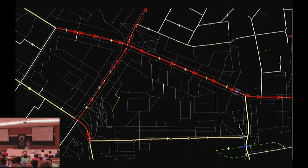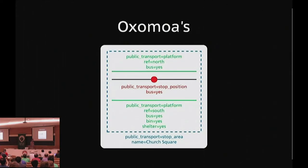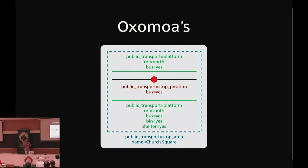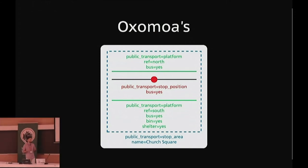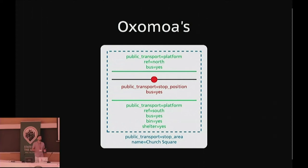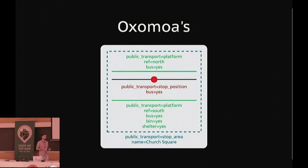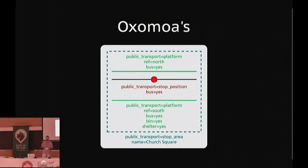After that I finally opened the wiki and tried to find out how to map public transport properly. At the time there was a popular schema by Sebastian Swartz, known as OXMOA. It was made by a committee of German mappers and looked very promising — based on European standards, it promised consistency, order in relations, and usability. I really liked the schema because it looked orderly; it made you feel like you know what you're doing.